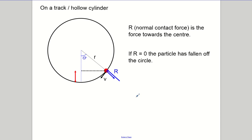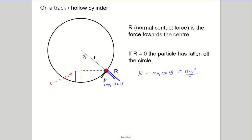The other type of problem is more like a roller coaster: an object on a track or rolling around the inside of a tube, like a centrifuge. You're not tied to the center of the circle, but there's a contact force R pushing you inwards. You've still got mg cos theta as your weight component acting the other way. The height change is now r minus r cos theta, and the formula becomes: R minus mg cos theta equals mv squared over r.